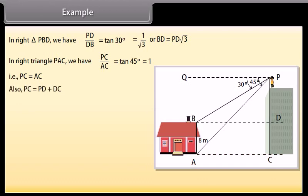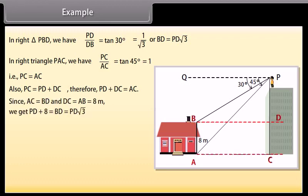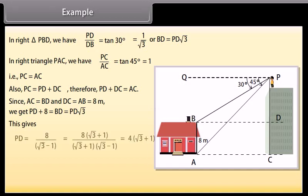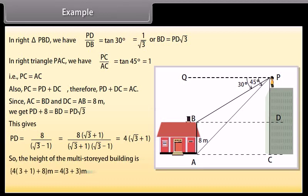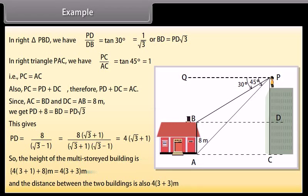Also, PC equals PD plus DC. Therefore, PD plus DC equals AC. Since AC equals BD and DC equals AB which equals 8 meters, we get PD plus 8 equals BD equals PD square root 3. This gives PD equals 8 upon square root 3 minus 1, which equals 8 into square root 3 plus 1 upon square root 3 plus 1 into square root 3 minus 1, which equals 4 into square root 3 plus 1 meters. So, the height of the multi-storied building is 4 into 3 plus 1 plus 8 meters, which equals 4 into 3 plus 3 meters. And the distance between the two buildings is also 4 into 3 plus 3 meters.